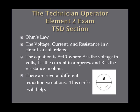Ohm's Law basically states that voltage, current, and resistance in a circuit are all interrelated. The equation for Ohm's Law is E is equal to IR, where E is the voltage in volts, I is the current in amperes, and R is the resistance in ohms. This will come back again and again if you ever work with electronics in any depth.